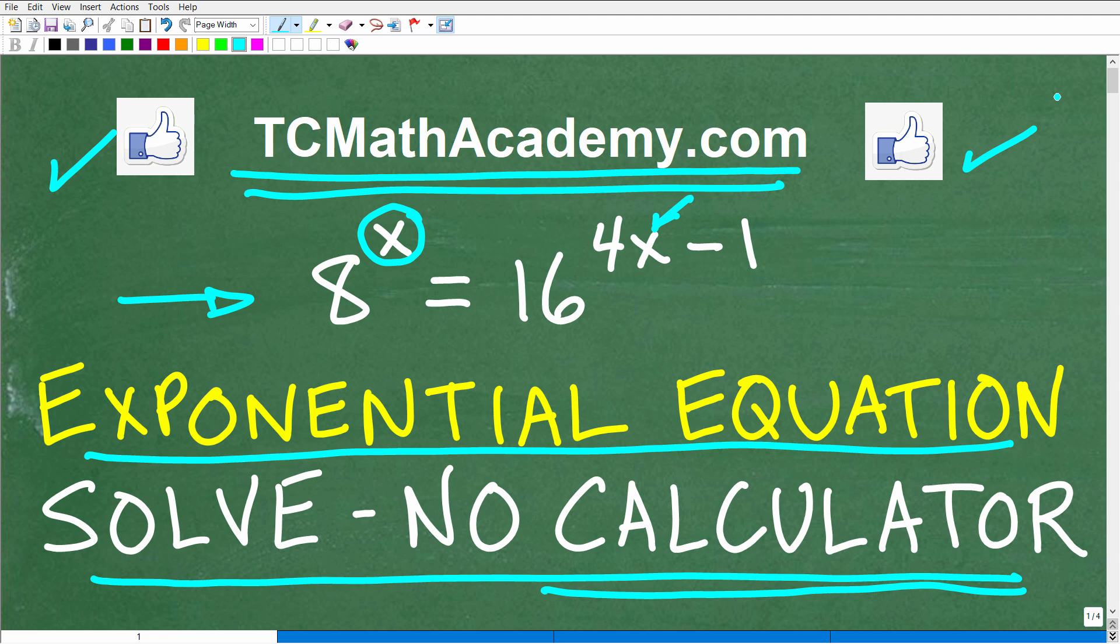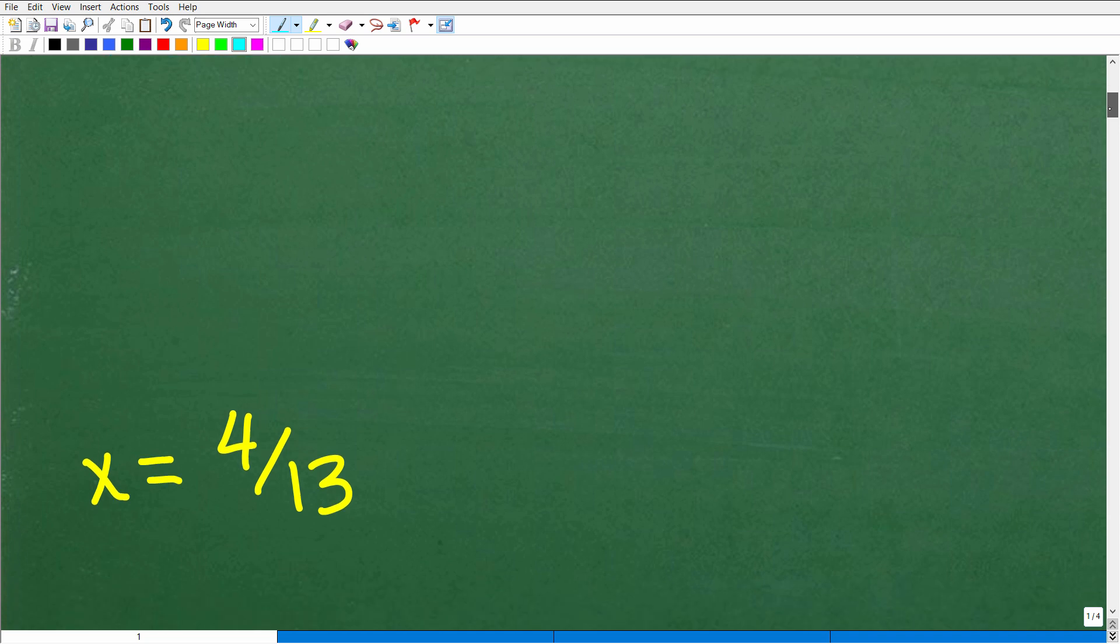Okay, so let's go ahead and take a look at the answer. Again, the equation here is 8 to the x power is equal to 16 to the 4x minus 1 power. We're trying to solve for x. So what is the solution? Well, x is equal to 4 thirteenths, 4 over 13. This is the correct answer.